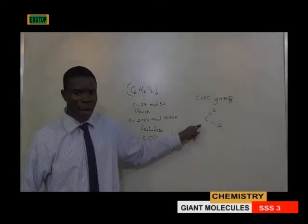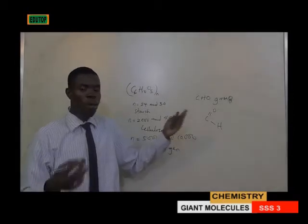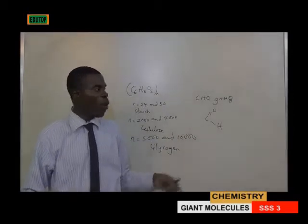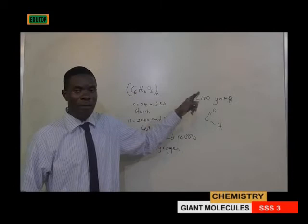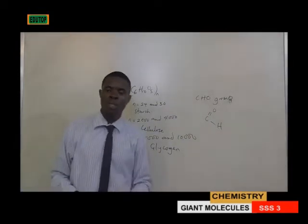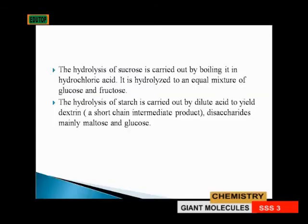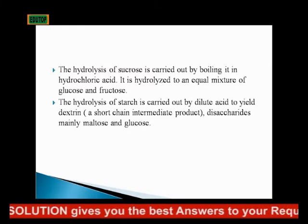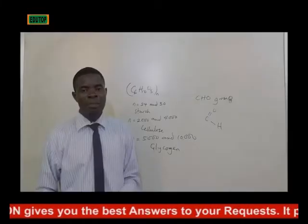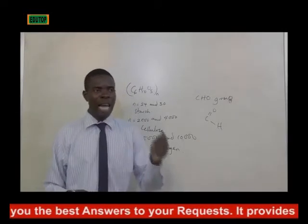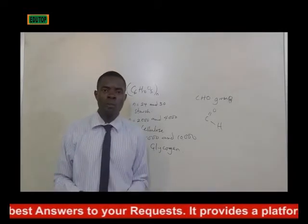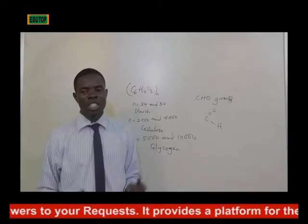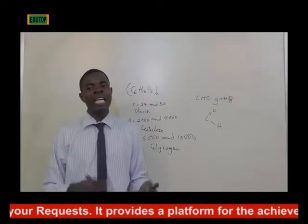Sucrose is a disaccharide because it consists of two molecules of monosaccharide, while glucose and fructose are monosaccharides. The hydrolysis of sucrose is carried out by boiling it in hydrochloric acid, and it is hydrolyzed to an equal mixture of glucose and fructose.